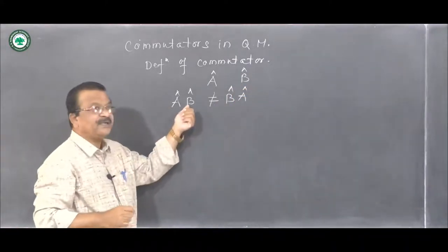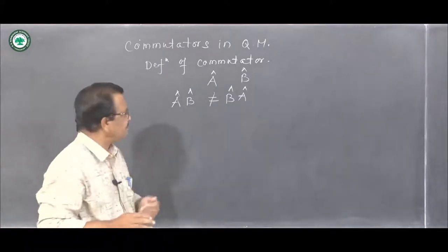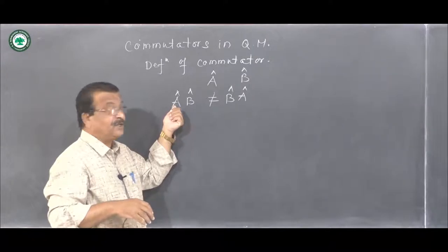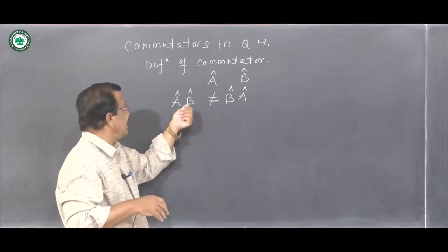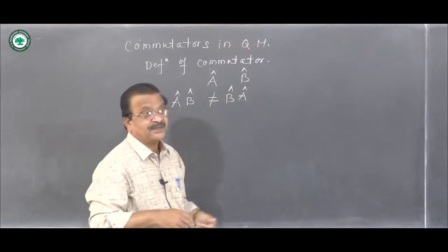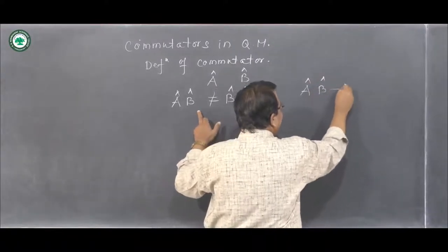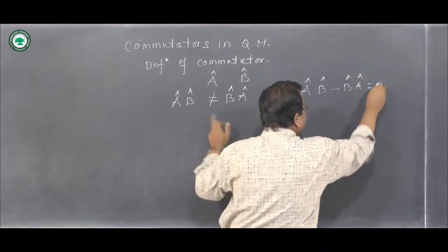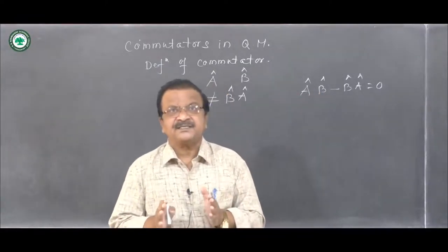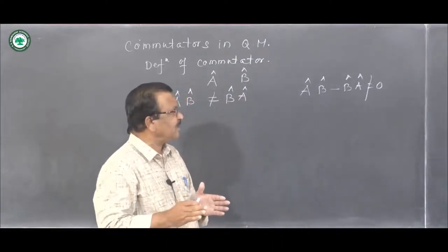What this means is: an operator operates on some wave function or state function and transforms that state function to some other function. Here, B operates on the state function first and then A operates on the resulting function. The effect of operation of B on the state function first and then by A may not be the same as the effect of operation of A on the state function and then by B. So the effects may not be the same, or AB minus BA may not be zero.